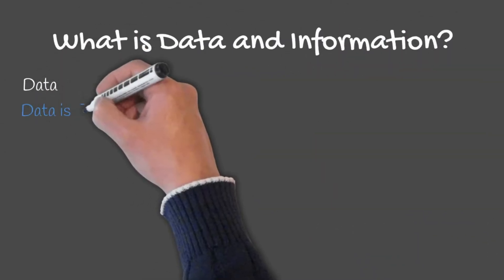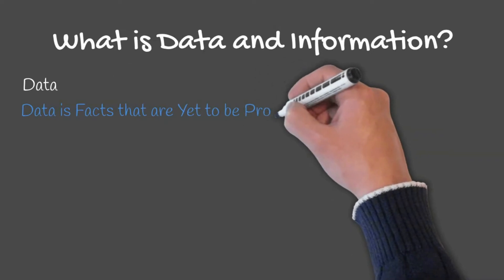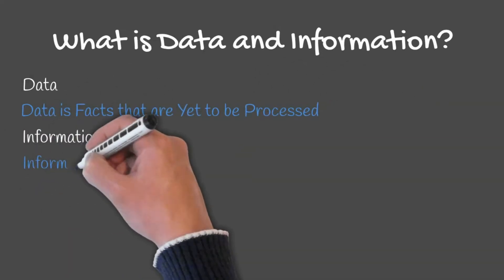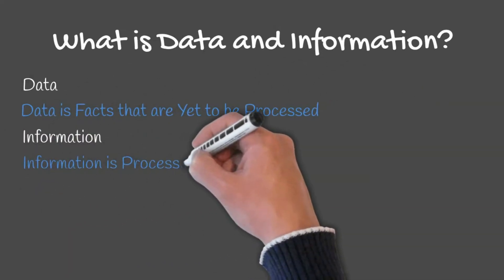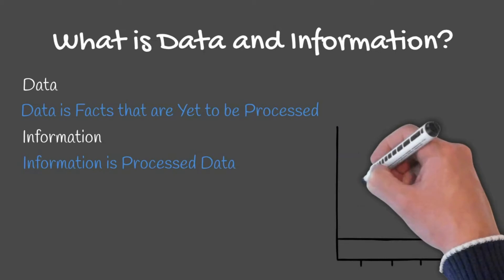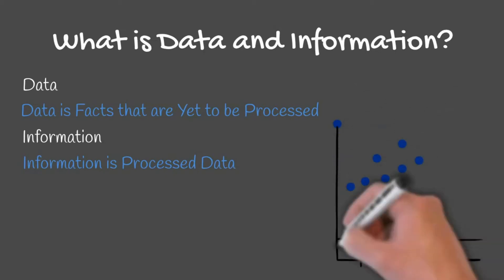So what is data and information? Data is facts that are yet to be processed, whereas information is processed data. Typically, data is not meaningful until it is processed into information.